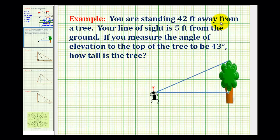Since you're 42 feet away from the tree, this distance here would be 42 feet. Your line of sight is five feet. So the distance from here to the ground would be five feet, where this would be the ground.